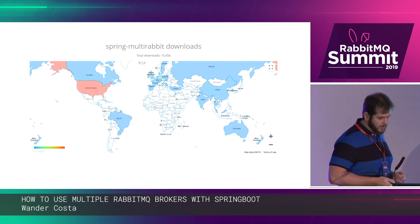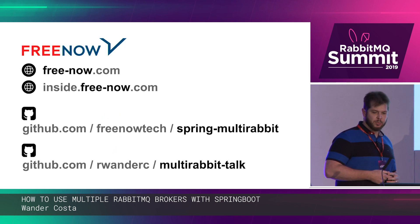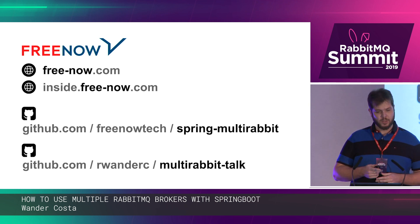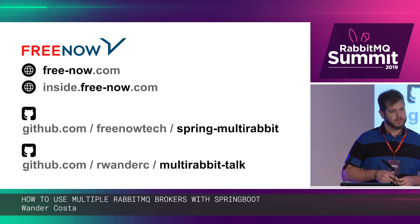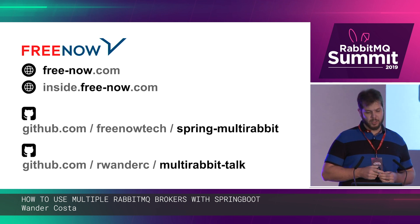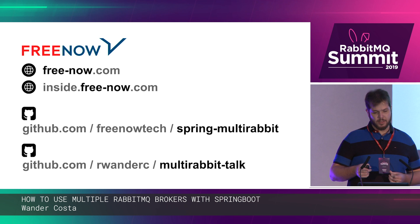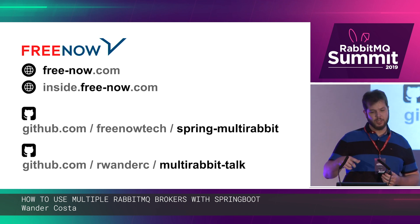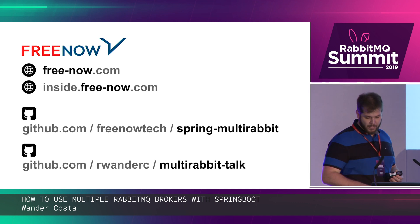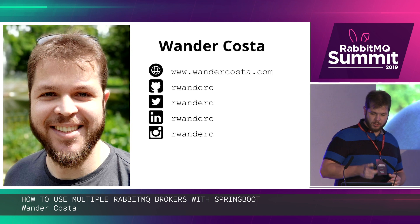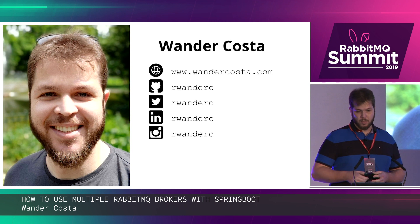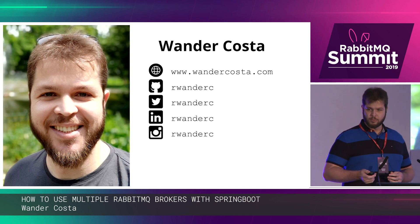That's pretty much what I wanted to talk about. If you want to take a look at our website or blog, we have tech information there. The library is published on GitHub under Freenow-Tech/Spring-MultiRabbit, and the code from this presentation is available in my GitHub account in the repository MultiRabbit-talk. These are my social networks and my blog if you're interested. I'm open for any questions.